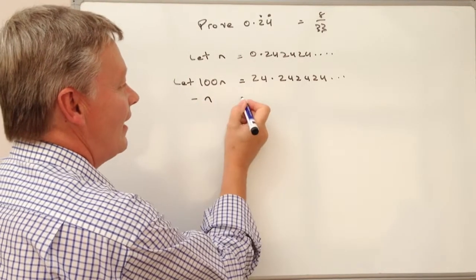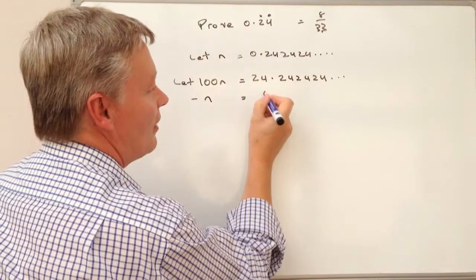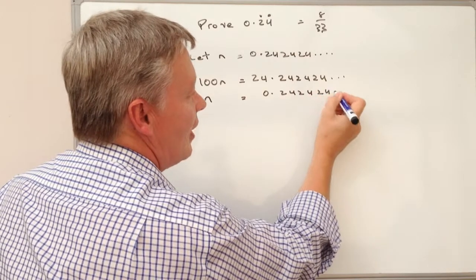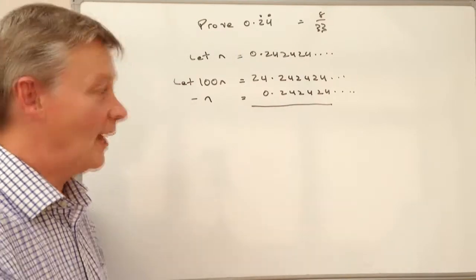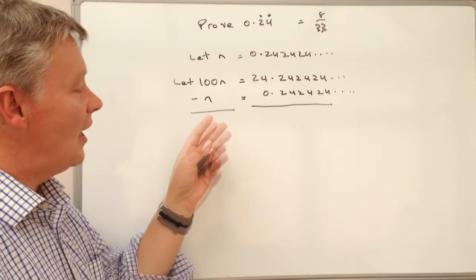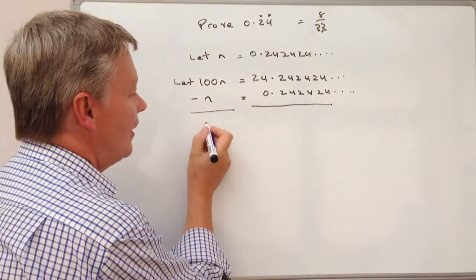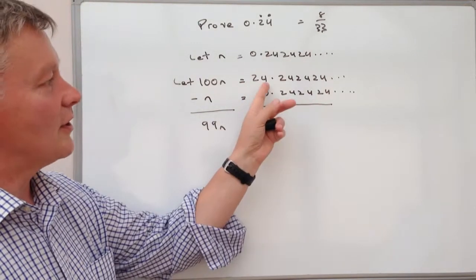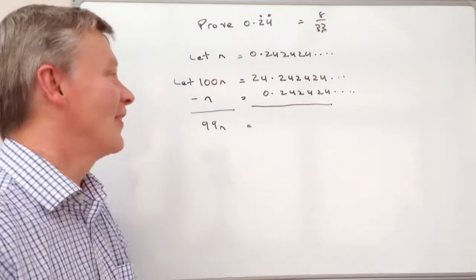But what we've got is if I say well minus n, well n is this. So I'm going to minus 0.242424 recurring and I'm going to take one away from the other. So what I've got now is a situation where I can create an algebraic equation. So I've got 100n take away n is 99n and on this side I've got 24.242424 so on minus 0.242424 so on.